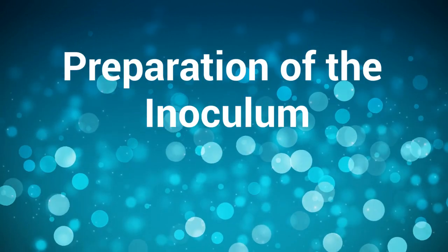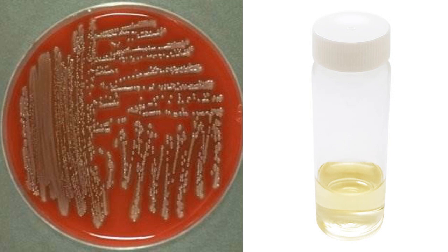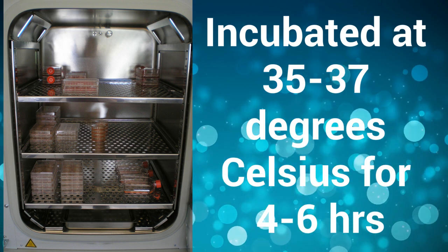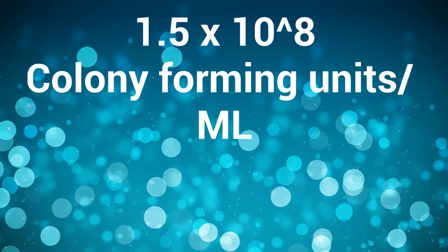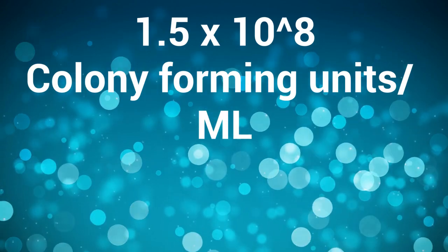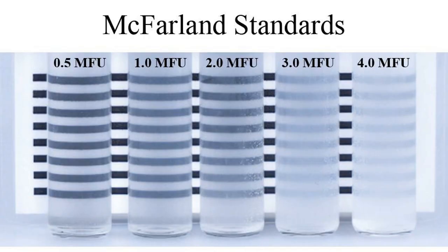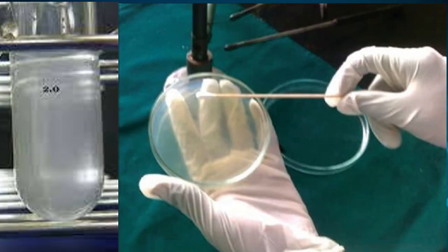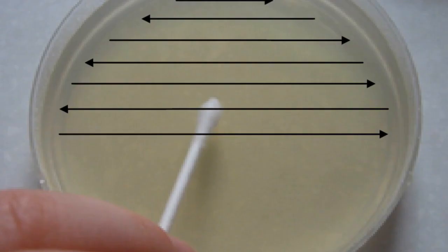Preparation of the inoculum: isolated pure colonies of the test bacterium are inoculated in a suitable liquid medium such as peptone water broth. It is then incubated at 35–37°C for 4–6 hours. The density of the organisms in broth is adjusted to approximately 1.5 × 10⁸ colony forming units per milliliter by comparing its turbidity with that of 0.5 McFarland opacity standard. For the lawn culture, the broth is then inoculated on the Mueller-Hinton Agar medium by spreading with sterile swabs. The ideal inoculum after overnight incubation should give an even semi-confluent growth.